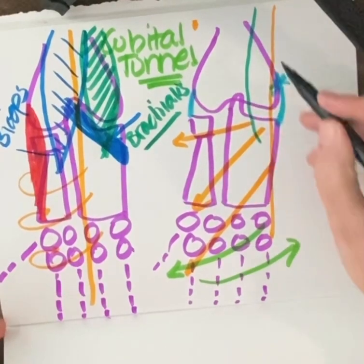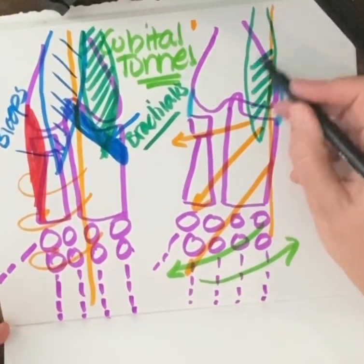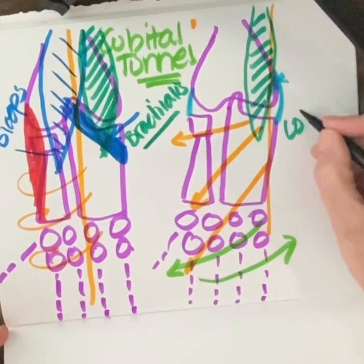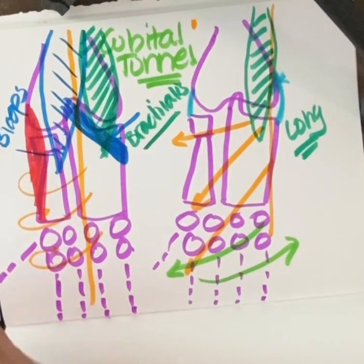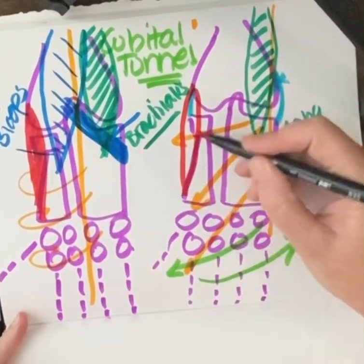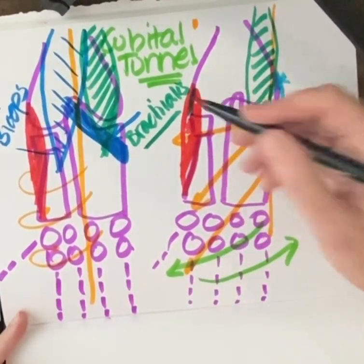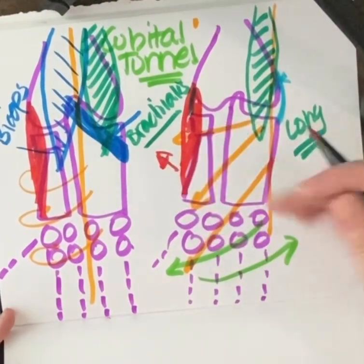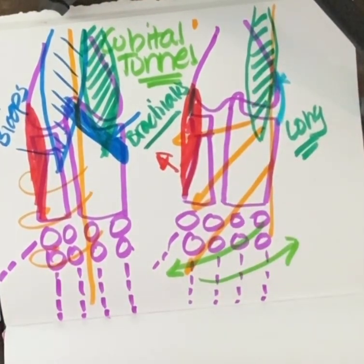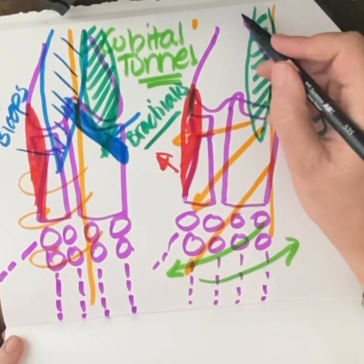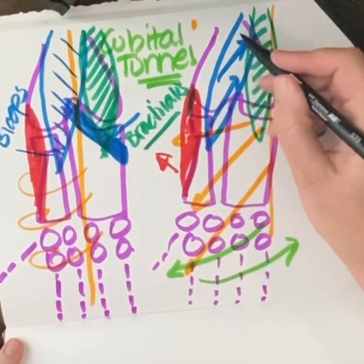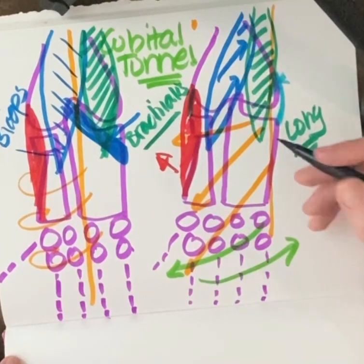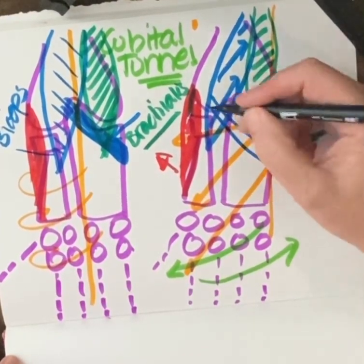Now we have a brachialis that's actually insufficient because it's too long — it's not doing its job. Then we have a really happy brachioradialis that's a little bit short and maintaining that valgus angle, keeping the arm over this way. As that occurs, bicep starts to create more tension because its angle of pull will keep that twist in the arm, and that also tractions the bicep aponeurosis even more.